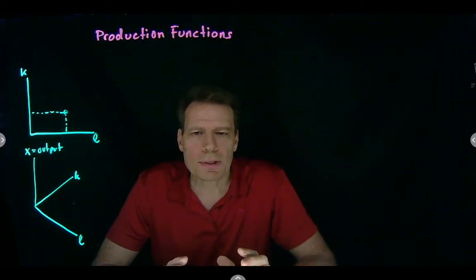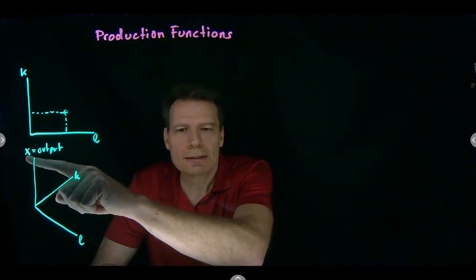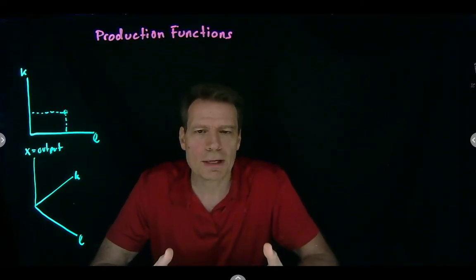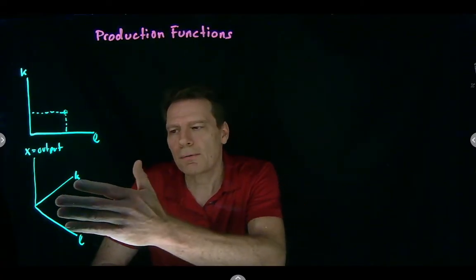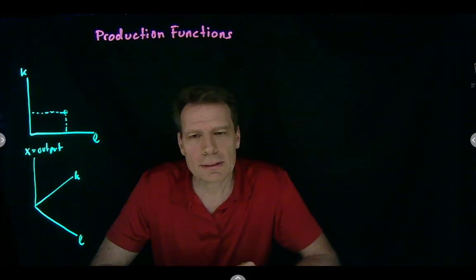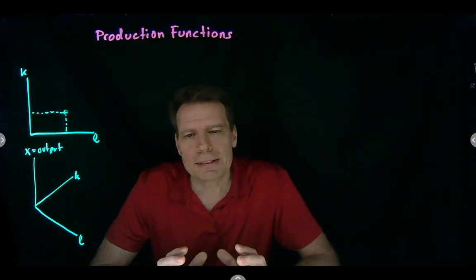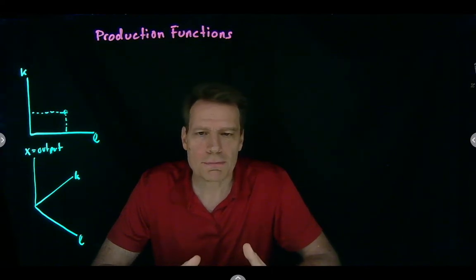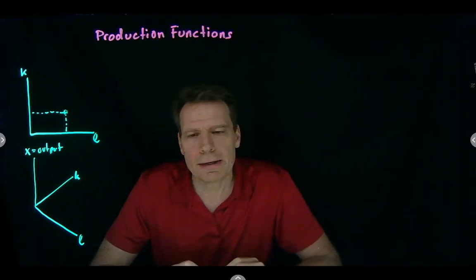One important difference between production and utility functions is that what we're measuring on the vertical axis now is objectively measurable. We can measure output — we can measure what comes out of the factory — in a way that we couldn't measure utility, because there's no objective measure of utility. So when it came to tastes or preferences, the shape of the indifference curves was what mattered, and many utility functions could represent any given indifference map. This is not true for producers: we can measure what's on the vertical axis, so we can't use lots of different production functions to represent the same technology converting inputs into outputs.